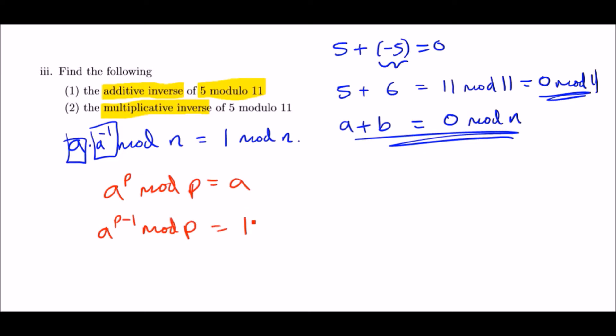So this tells us that to get 1, we can simply find a to the negative 1. Let's take this one step further. To get a to the negative 1 from here, we can multiply both sides by a to the negative 1, so we have a to the power p minus 2 mod p.